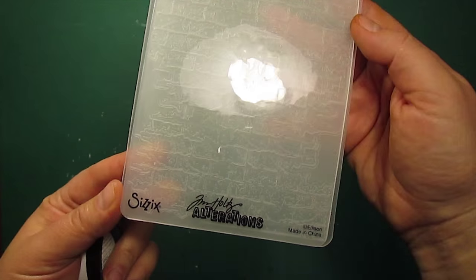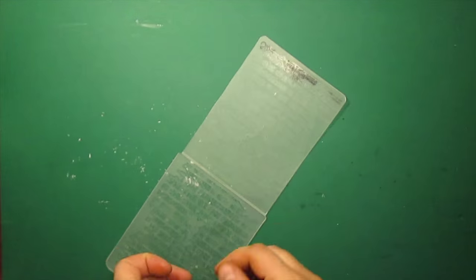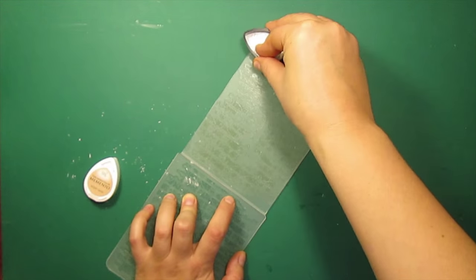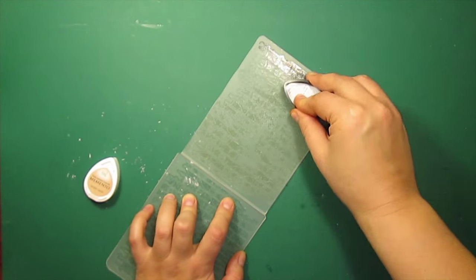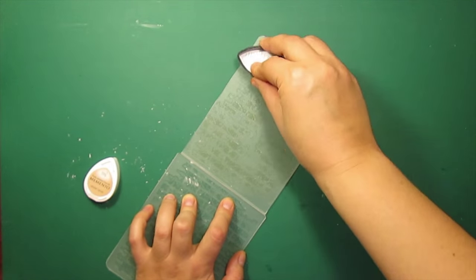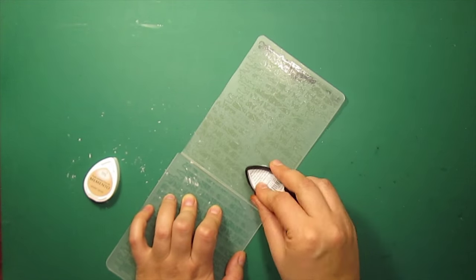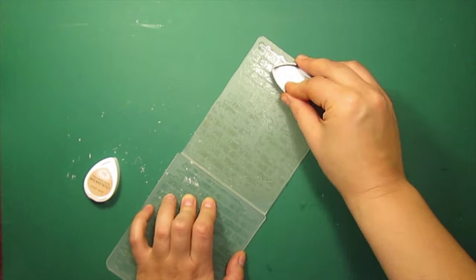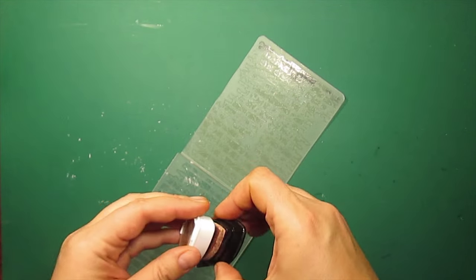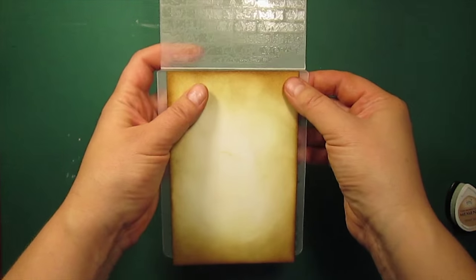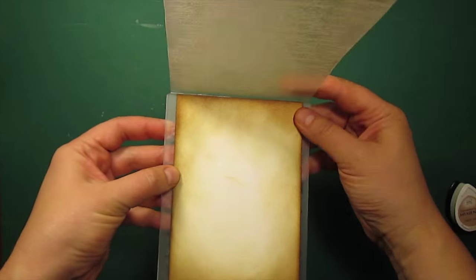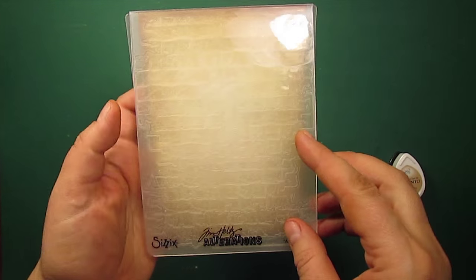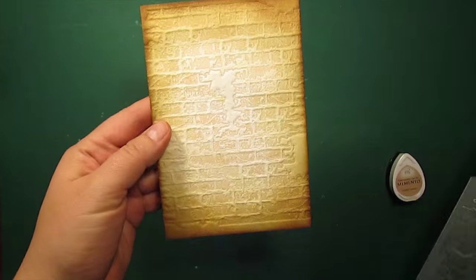I'm taking my brick texture embossing folder by Sizzix and inking it up with Memento Desert Sand ink. Then I'm placing the distressed cardstock inside and running it through the die cutting machine.